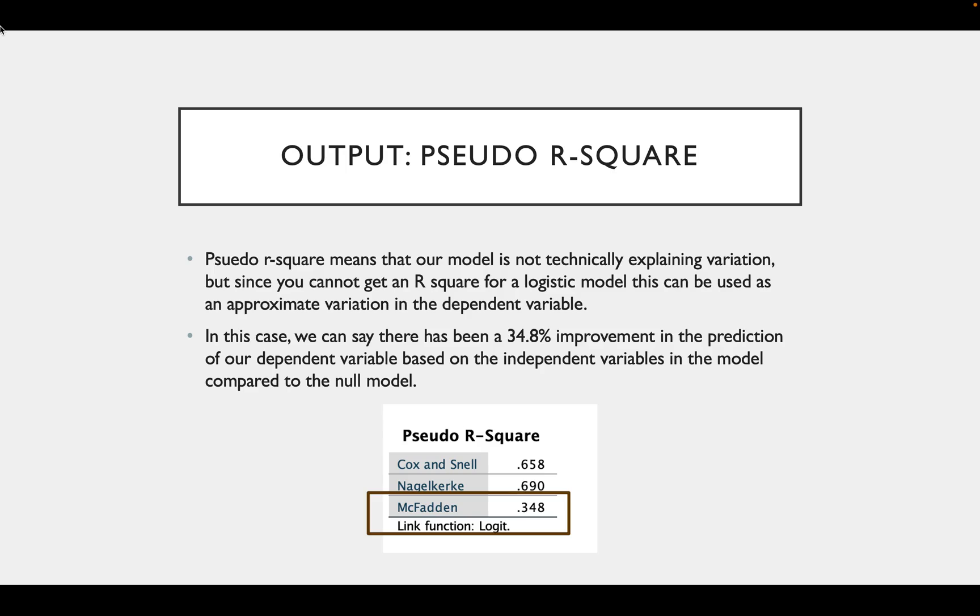The next box is pseudo r-squared. And we calculate a pseudo r-squared because you cannot get r-squared for logistic regression. So while our model is not technically explaining variation, you can use this as an approximate measure of variation.